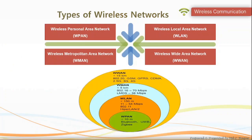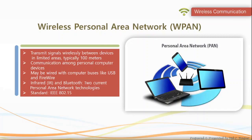There are four types of wireless networks: wireless personal area network, wireless local area network, wireless metropolitan area network, and wireless wide area network. Wireless personal area network transmits signals wirelessly between devices in limited areas, typically 100 meters. It is a computer network used for communication among devices close to one person. Infrared and Bluetooth are the two current wireless personal area network technologies. This network is based on IEEE 802.15 standard.